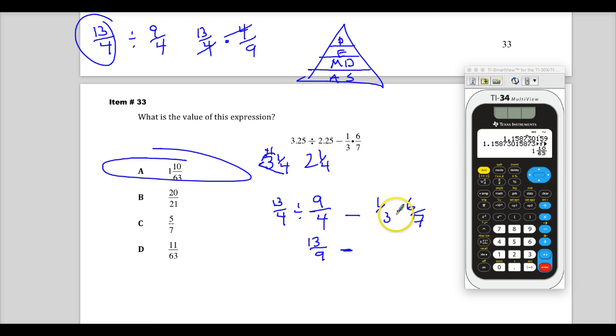Minus, and I can go ahead and do the 1-third times 6 over 7, and just write that answer down, so I get 6 over 21.